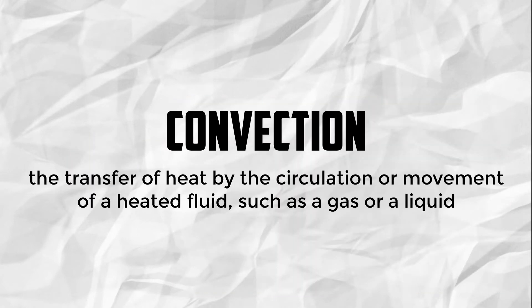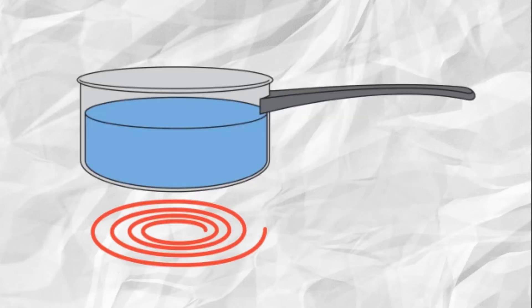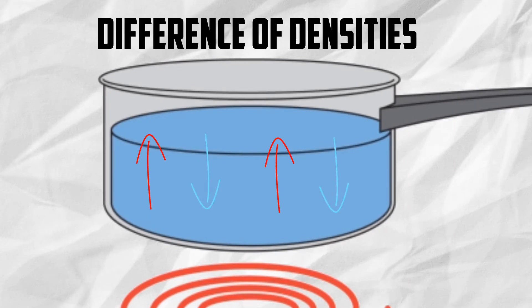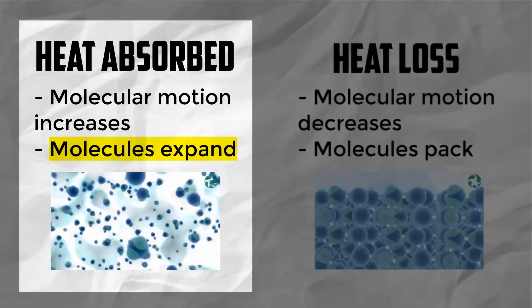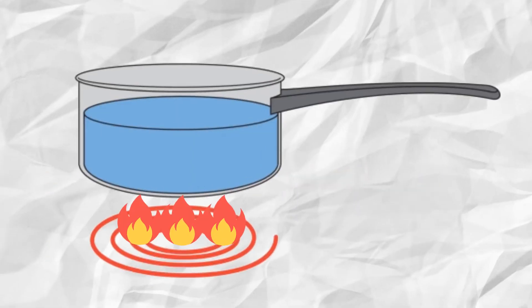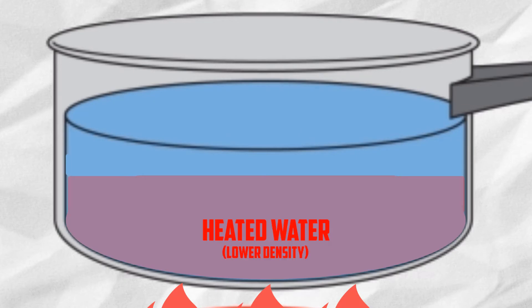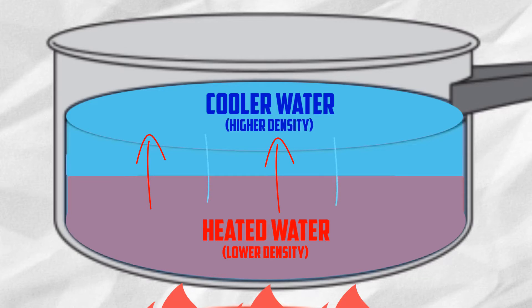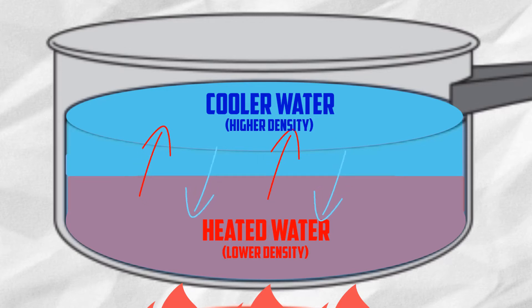Convection is the transfer of heat by the circulation or movement of a heated fluid, such as a gas or a liquid. This way of heat transfer follows the common saying: hot air rises, cold air falls. Heating water on a stove is a good example of this. When you heat water, the warmer water rises and the cooler water falls, because of the difference in densities. Heating something up causes the molecules to spread apart more, so the heated water has a lower density and rises, carrying its heat with it. The cooler, denser water falls. This is why convection usually happens in a circular motion.